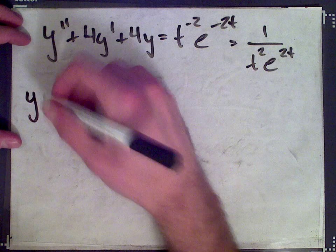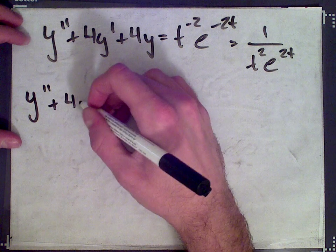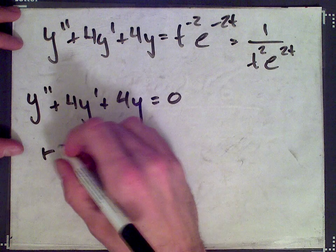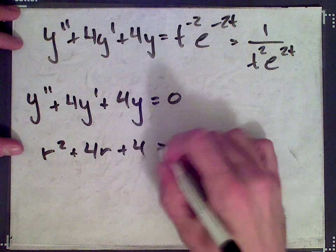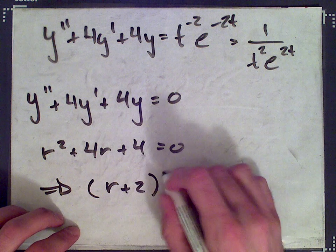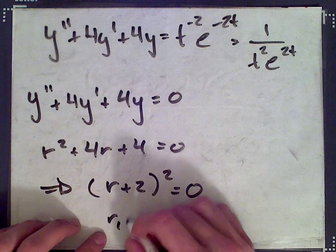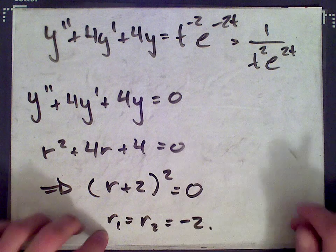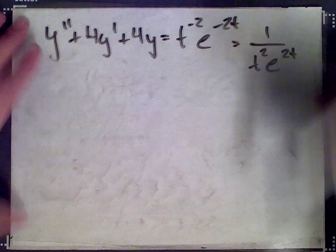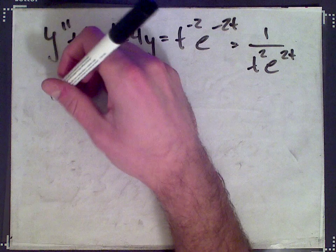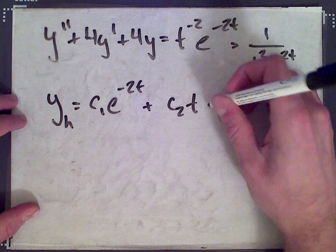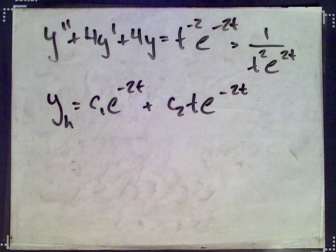Let's solve the homogeneous equation first: y double prime plus 4y prime plus 4y equals 0. We get r squared plus 4r plus 4 equals 0, which factors as (r + 2)² = 0. We have double roots r1 = r2 = -2, which means the homogeneous solution is yh = c1e^{-2t} + c2te^{-2t}. The t is there because of the double root.